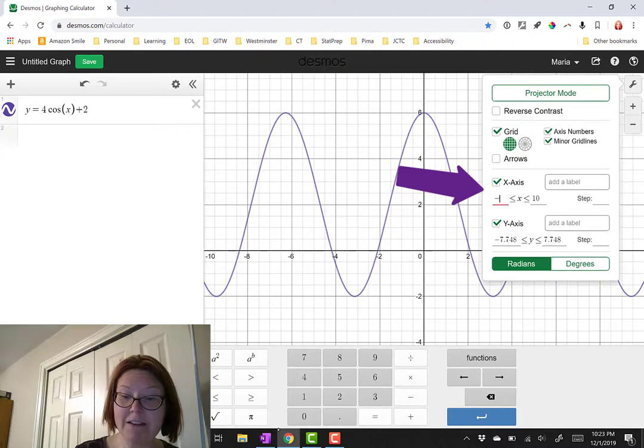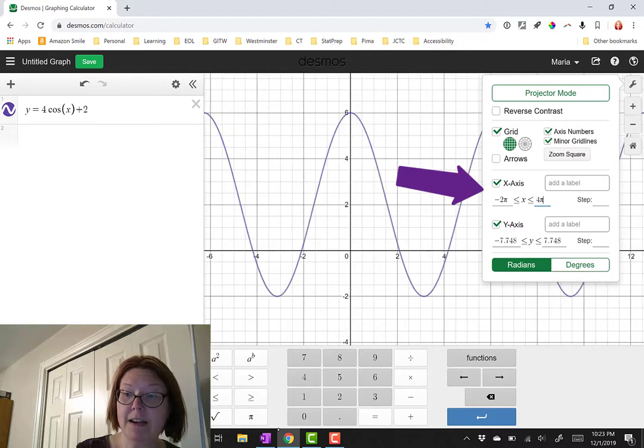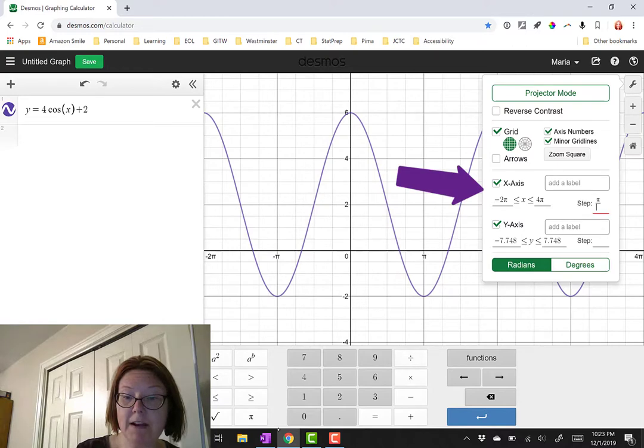So let's say from negative 2 pi to positive 4 pi. And I'm going to make my step size pi divided by 4.